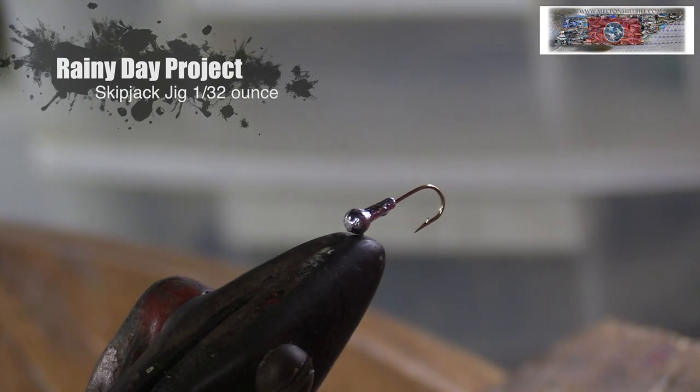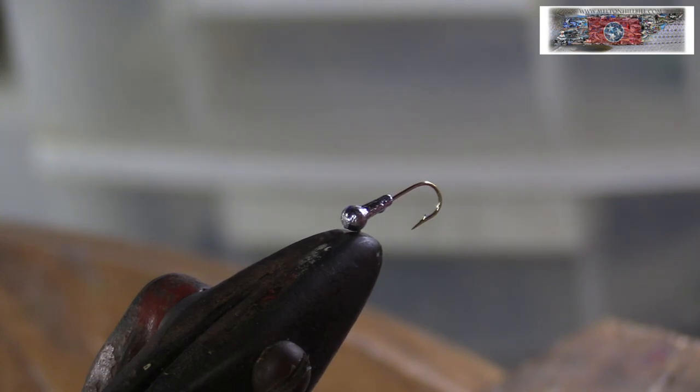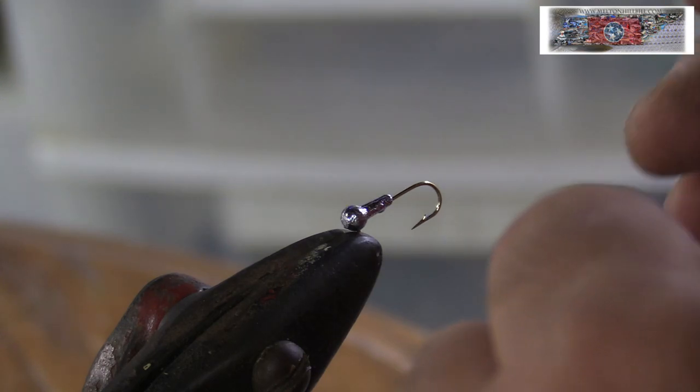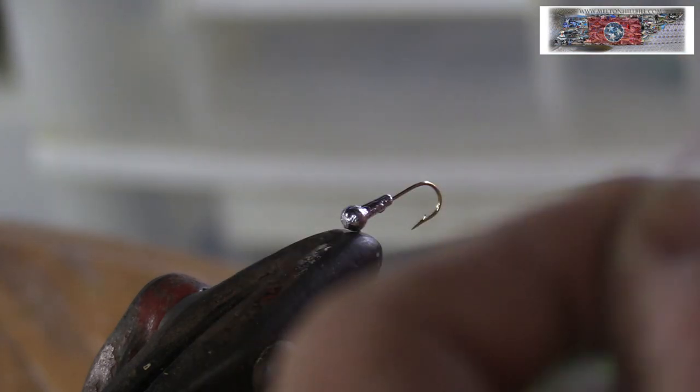We're going to tie a skipjack jig. Every now and then you get a couple of days where the skipjacks are just really finicky and don't want to bite anything, so I downsize. Sometimes it's pretty fun to go ahead and just tie your own. That's what we're gonna do today.